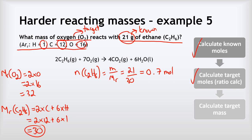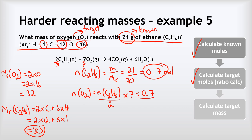Now we calculate the moles of our target oxygen using the ratio calculation. The number of moles of O2 equals the number of moles of C2H6 divided by 2 — because there are two ethanes in the equation — multiplied by 7. So 0.7 divided by 2 multiplied by 7 gives us 2.45 moles of oxygen.